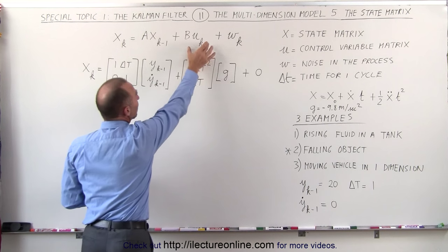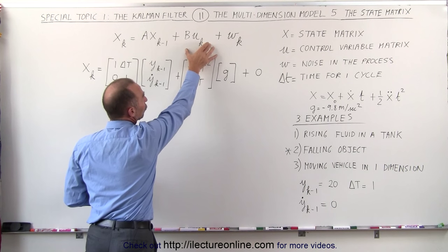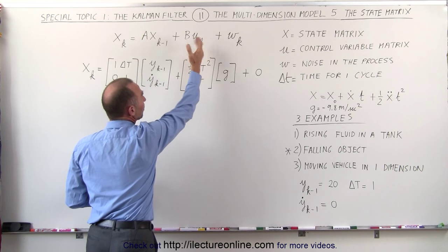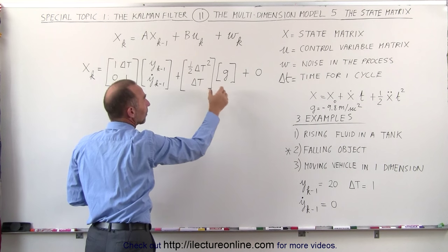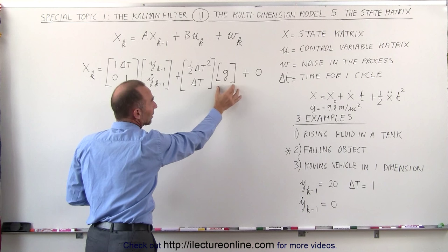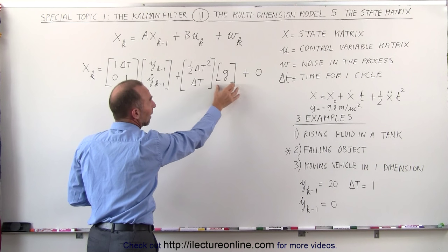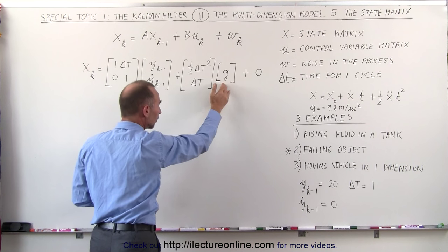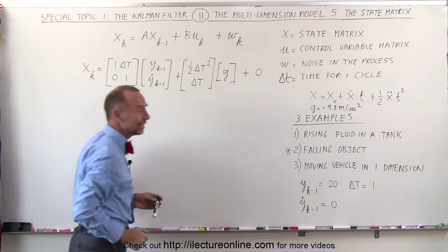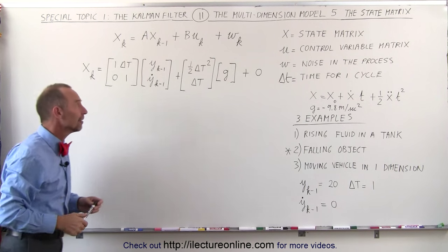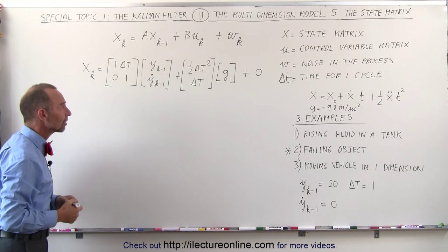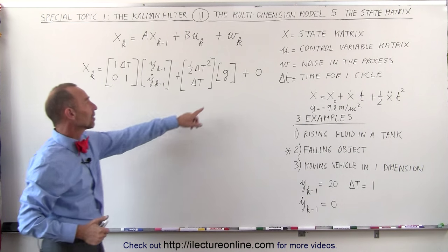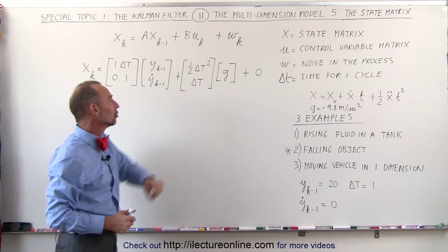The U matrix, the control variable matrix — in this case the falling object is affected by the force of gravity, and therefore it experiences an acceleration in the negative y direction. We have acceleration equal to g.